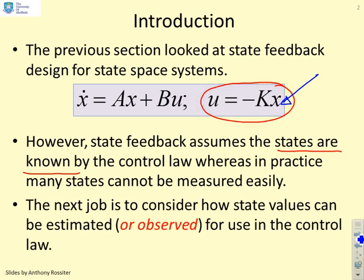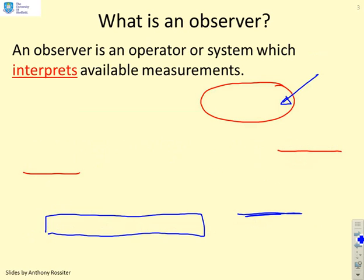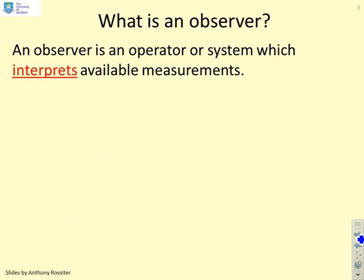So our next job is to consider how these state values can actually be estimated or observed. Where do we get these state values from? An observer is an operator or a system which interprets available measurements — the goal is to go from measurements to an actual value.